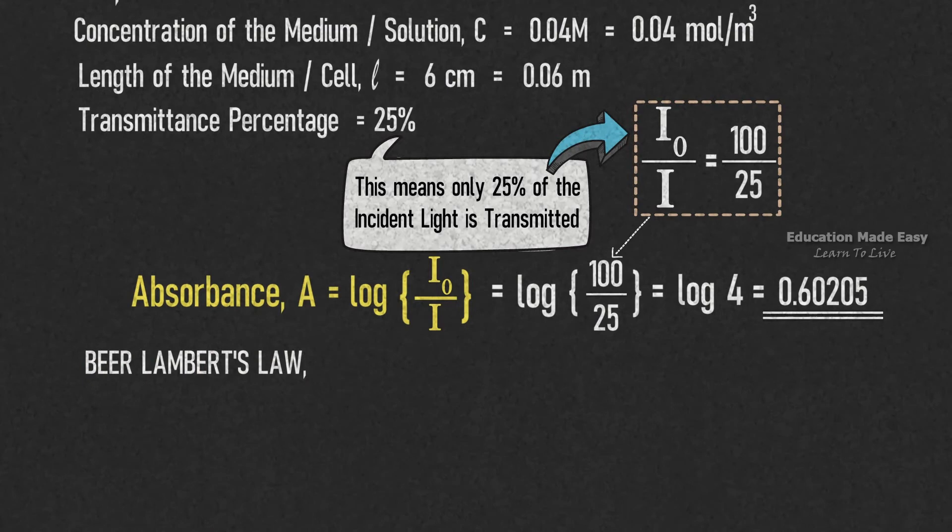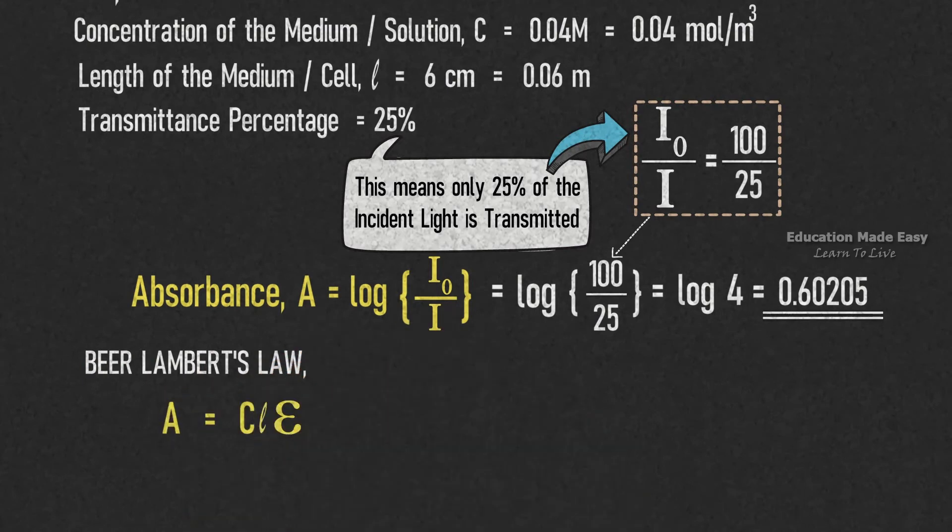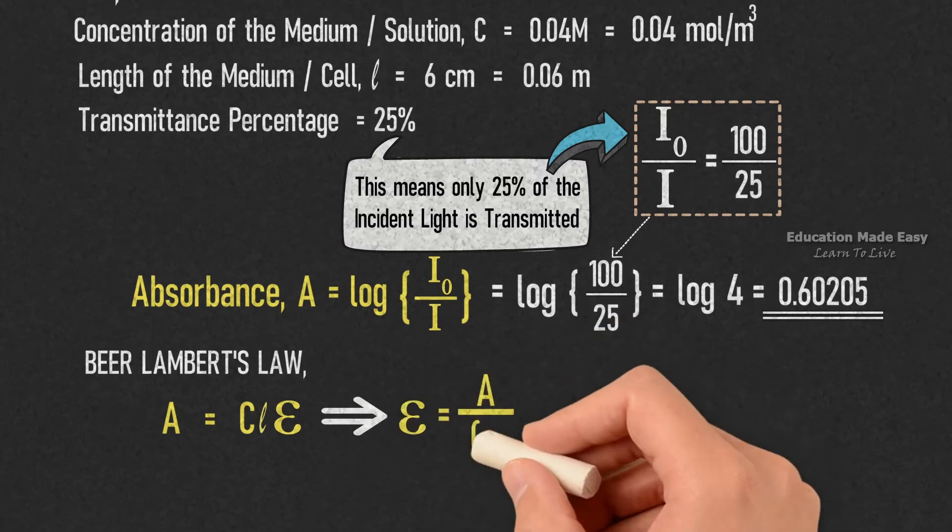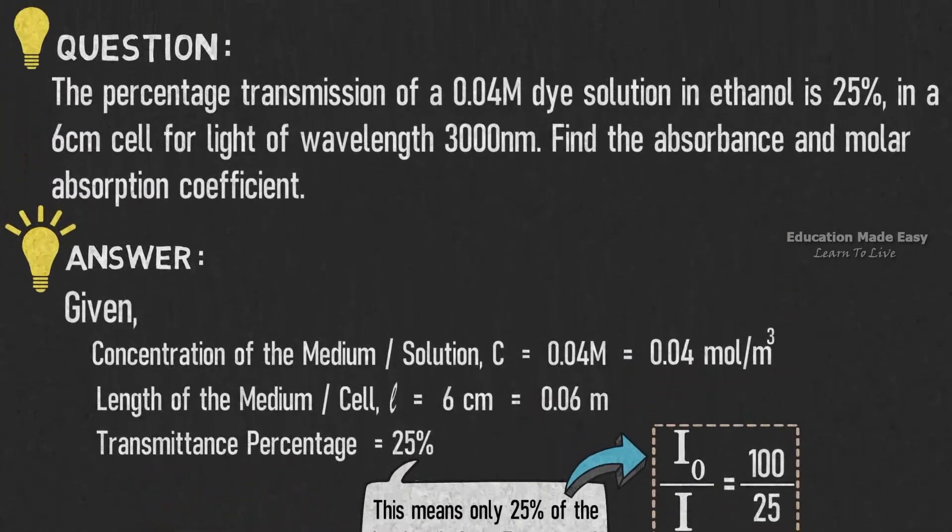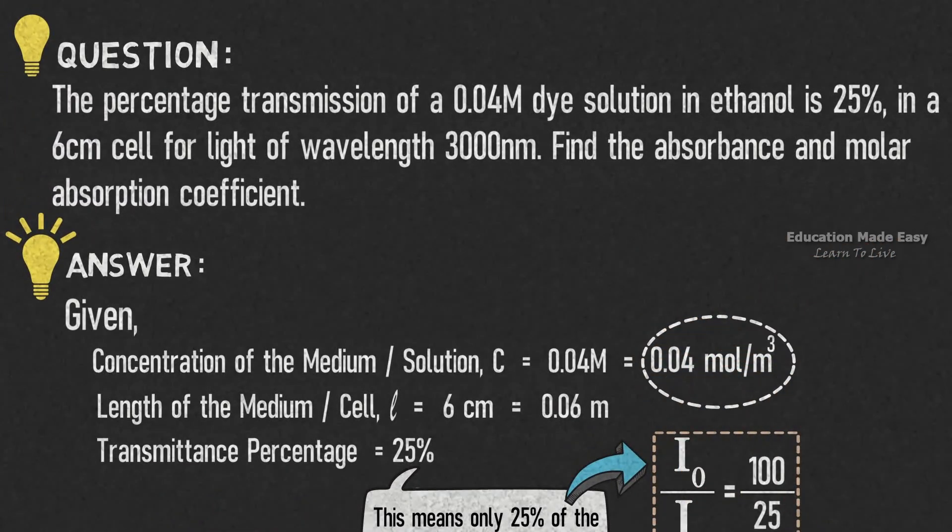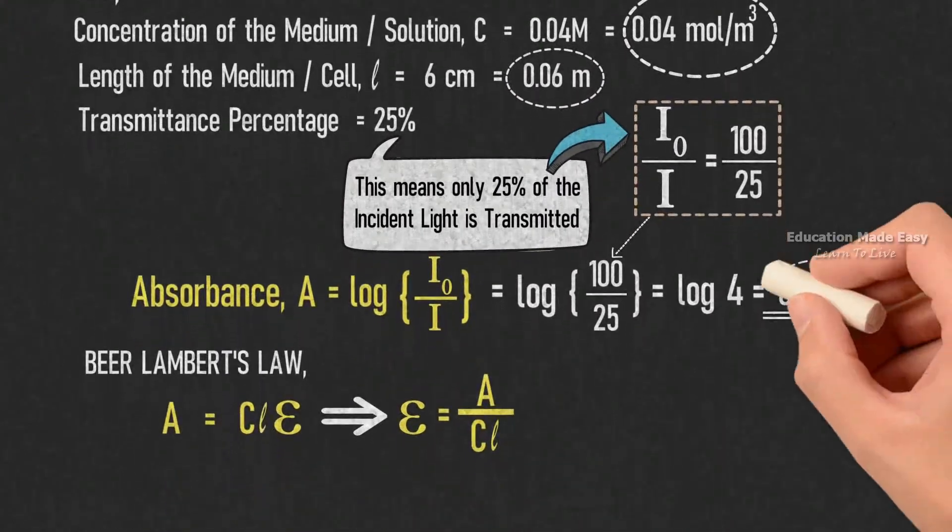According to Beer-Lambert's law, absorbance A is equal to CL epsilon, which implies epsilon is equal to A divided by CL. We already have the value for concentration of the medium C, length of the medium L, and absorbance A.